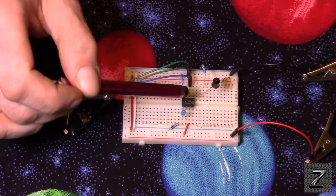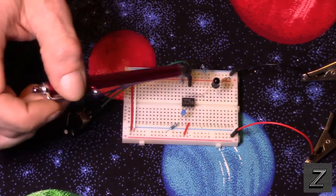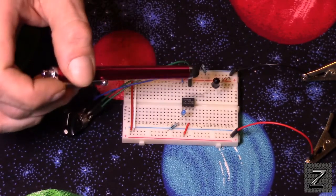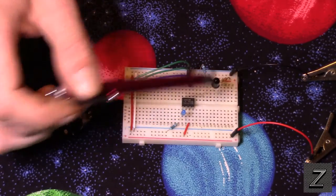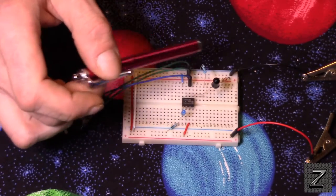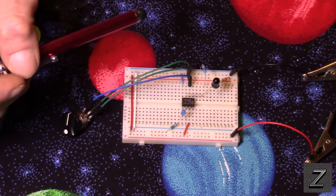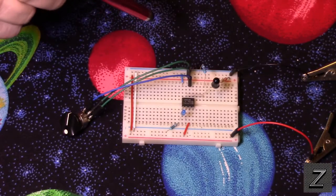These are super easy to find and what we have it set up as is a comparator. So when the reference voltage is compared to the voltage coming in from the sensor and we have the sensor set up in a voltage divider to get more stable readings. If you try just hooking it straight up, your ambient light is going to be messing with it, all kinds of things. So you want to hook it up as a voltage divider.